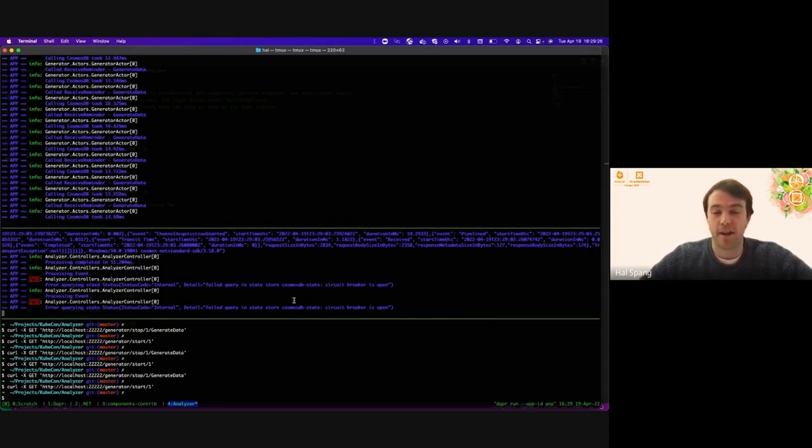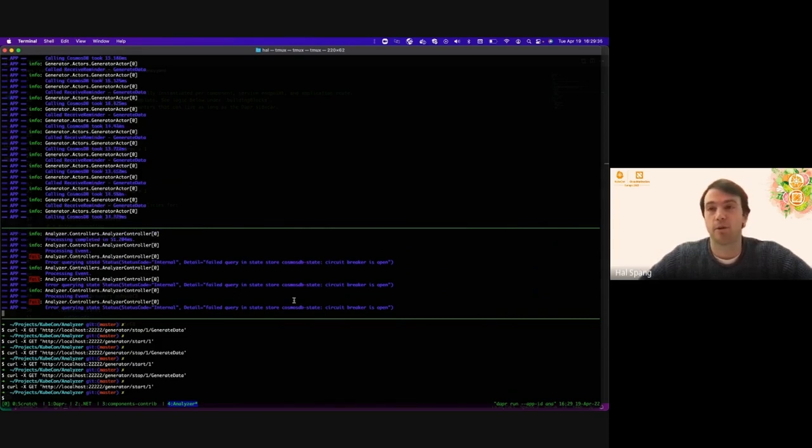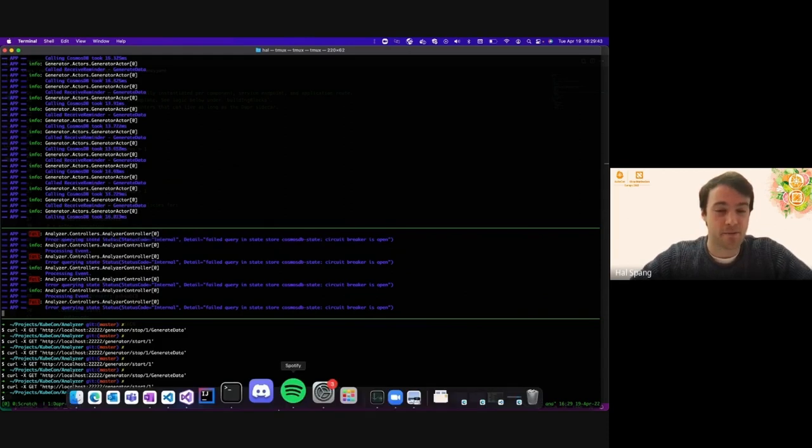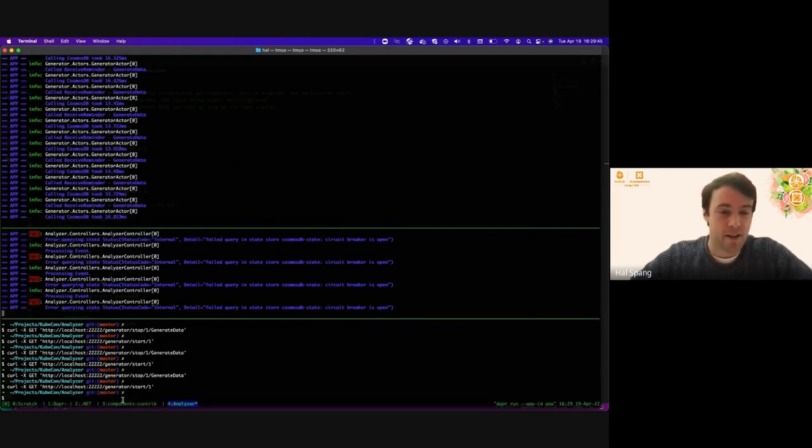And of course you could tune this to have a longer outage period if you wanted to, or a shorter one, you could take more requests, but at the end of the day, what's happening is our circuit breaker is stopping us from overloading the database, and stopping us from causing further impact with our bad deployment. So that is the demo. Any questions before I stop sharing?